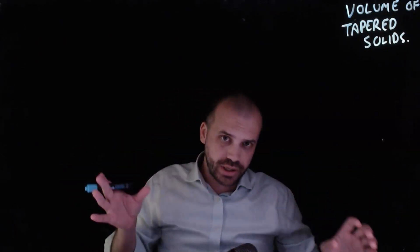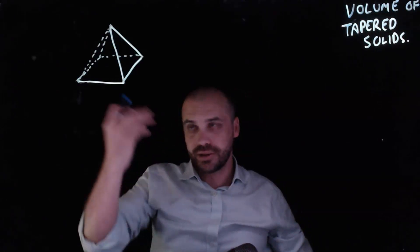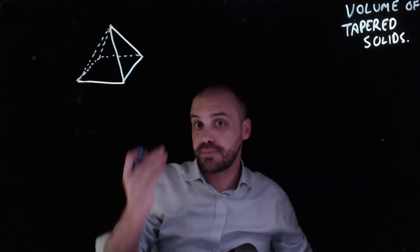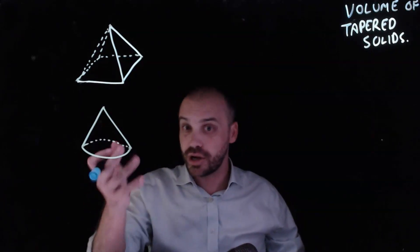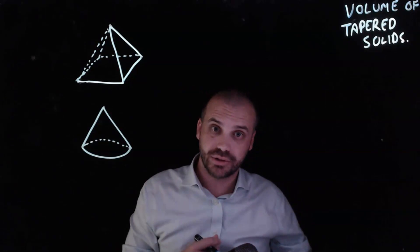So this time we're doing volume of tapered solids. Now rather than give you some wordy explanation, I'm going to show you a few tapered solids. A pyramid like the pyramids in Egypt is a tapered solid. A cone like an ice cream cone or in this case an upside down ice cream cone is a tapered solid.